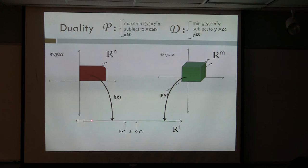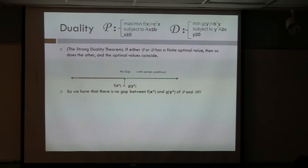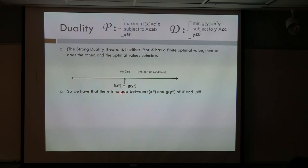You have the primal space and the dual space, and they're both mapping to R1. F of x is always bounded by G of y. But at the optimum — x star, y star — the optimum for the primal space and the optimum for the dual space, is there a gap? What's called the duality gap? That is answered in what's called the strong duality theorem: if either P or D has a finite optimal value, so if neither of the regions are unbounded, then you can optimize your objective function for P and for D and there will be no gap. They will equal each other at that point.